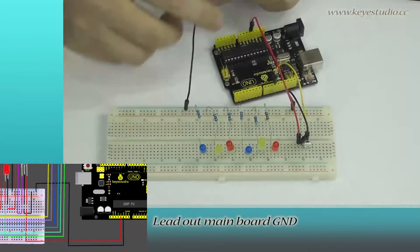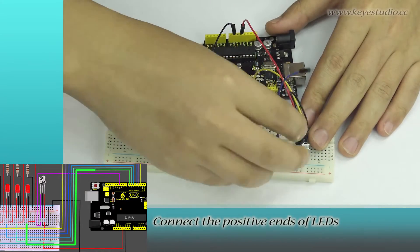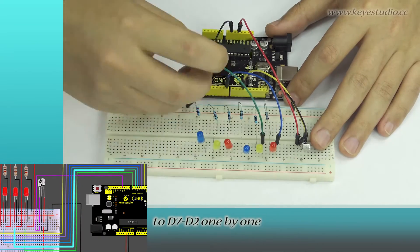Lead out mainboard GND. Connect the positive ends of LEDs to D7 to D2 one by one.